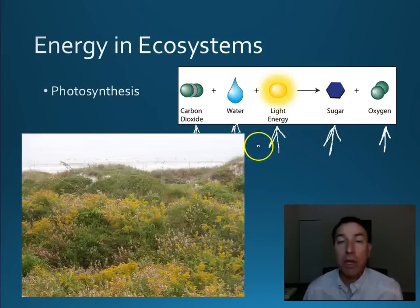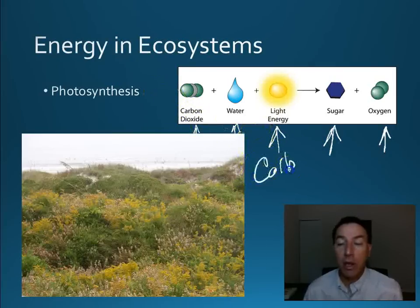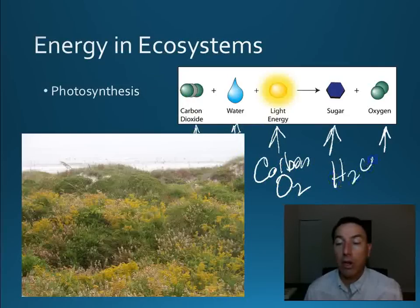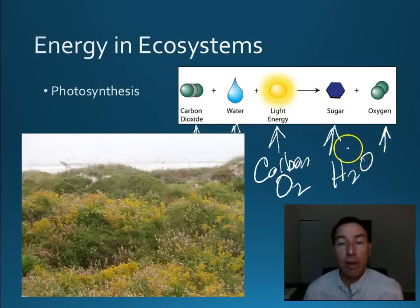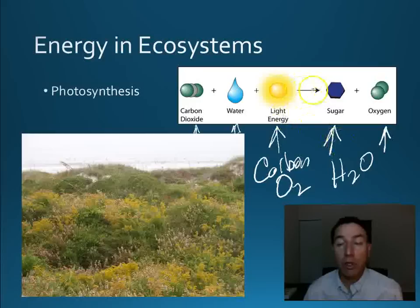Some of the major cycles involved here are the carbon cycle, the oxygen cycle, and the water cycle — all involved in the photosynthesis process. We have to know about those cycles in order to understand the particular chemical equation as well.